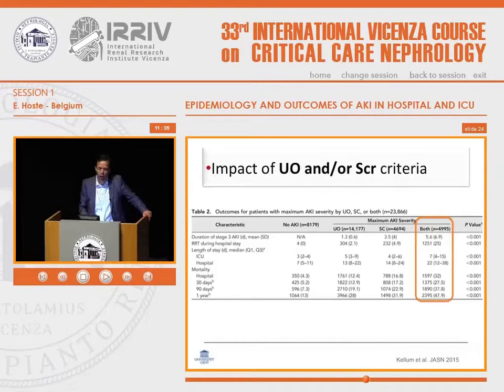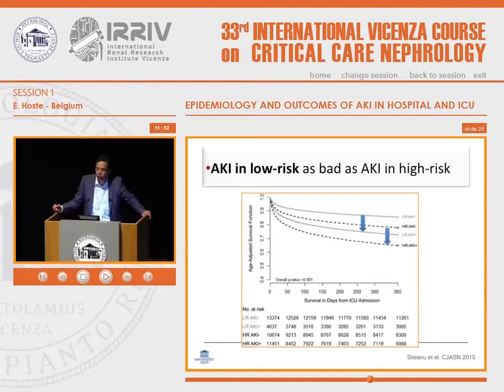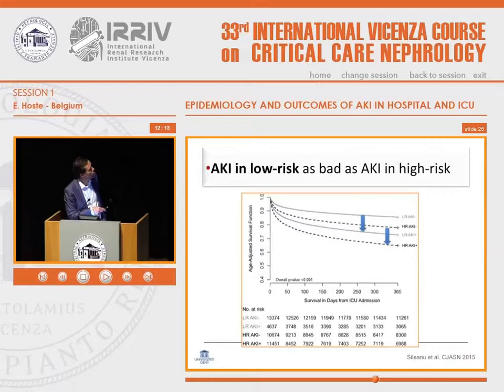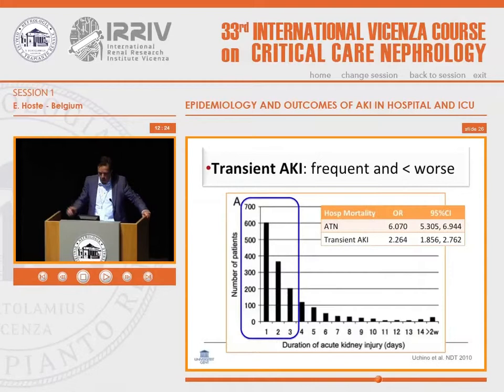This explains the huge variation seen in epidemiology papers. Comparing low-risk patients — not mechanically ventilated or treated with vasopressors — to high-risk patients, low-risk patients have better outcomes. However, when comparing low-risk patients without AKI to low-risk patients with AKI, the difference in outcome is similar to the difference between high-risk patients with and without AKI. So AKI has the same signal on mortality in both low-risk and high-risk patients — fascinating data.